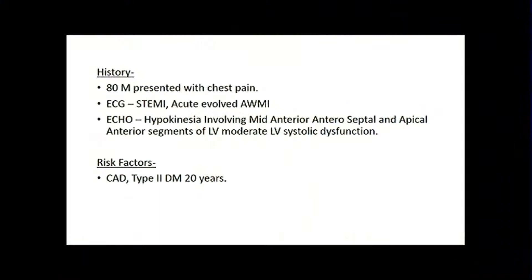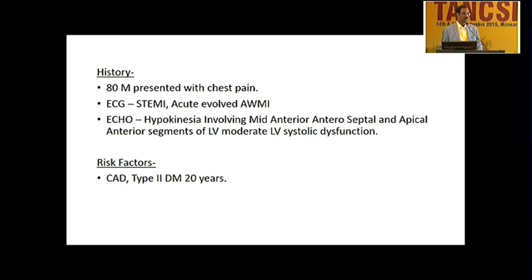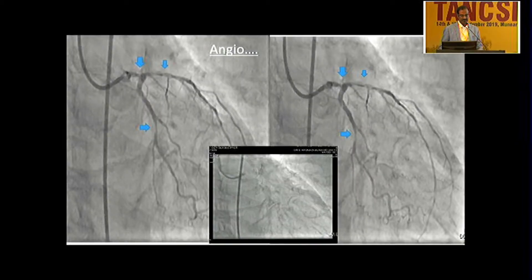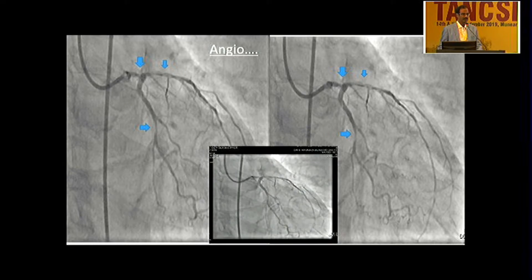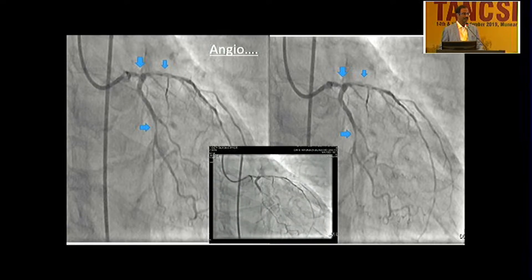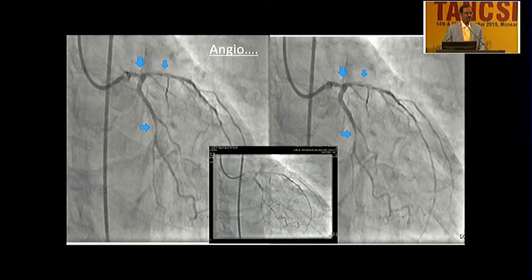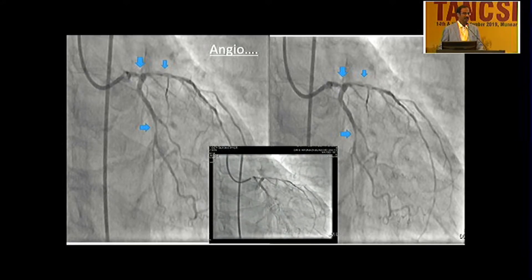An 80-year-old man presented with inferior MI and moderate LV systolic dysfunction, with a history of 20 years of diabetes, referred for revascularization. The angiogram showed ostio-proximal left main 30 to 40% stenosis and distal left main 70%, with proximal LAD 70% and mid LAD showing a thrombus-containing 95% stenosis, and LCX showing 80% stenosis.